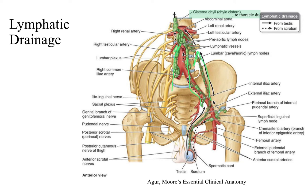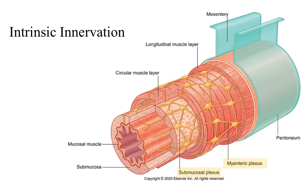In this picture, notice that all the lymph nodes travel in one direction — upward towards the cisterna chyli, or the chyli cistern. Once they're in the cisterna chyli, that's where they enter the thoracic duct and empty into the venous drainage at their appropriate location, which is typically the left subclavian vein.